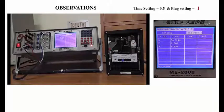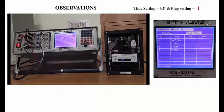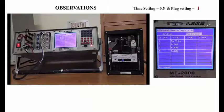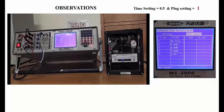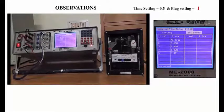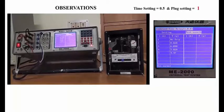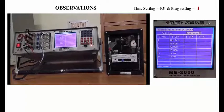For I = 4 amperes, a trip is observed at 5.028 seconds. At I = 5 amperes, a trip occurs at 4.47 seconds. For I = 7 amperes, the relay trips at 3.768 seconds.